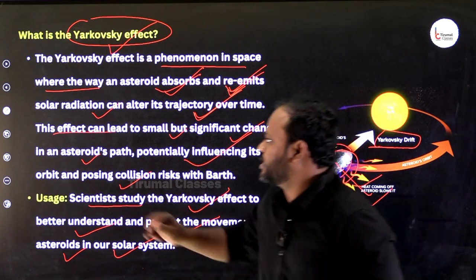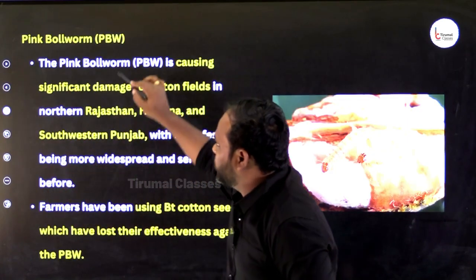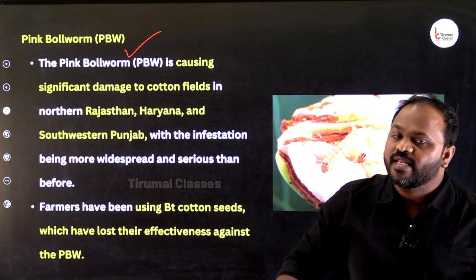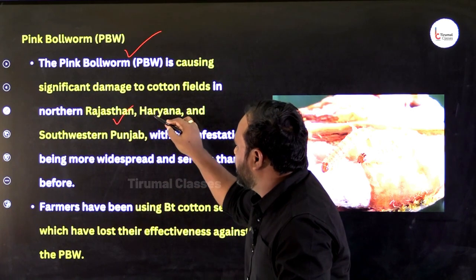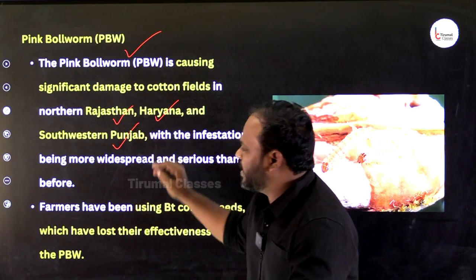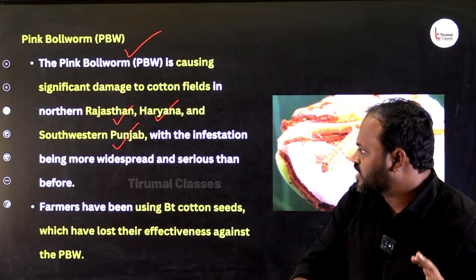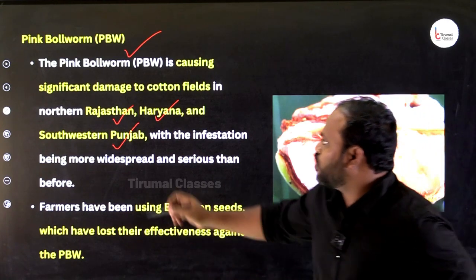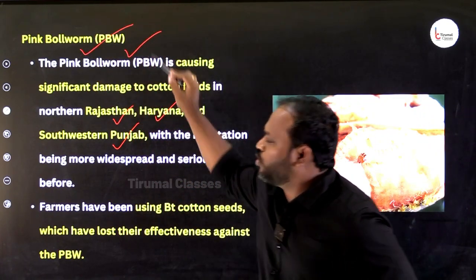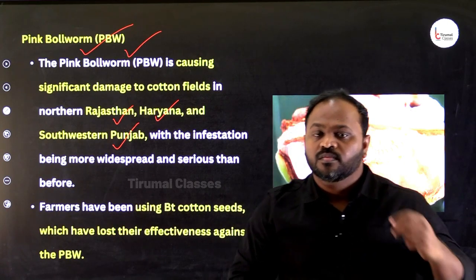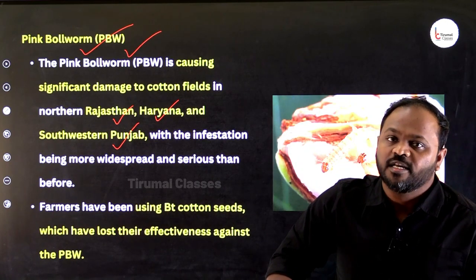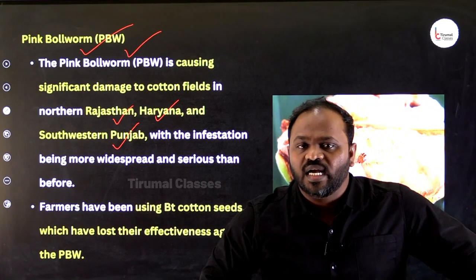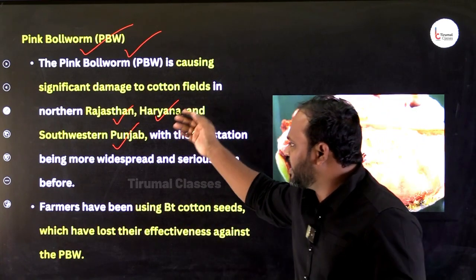The next important topic is the Pink Bollworm. Recently in the states of Rajasthan, Haryana, and southern Punjab — which are major cotton cultivation areas — the Pink Bollworm has been seriously damaging cotton crops, leading to a reduction in their output and production.